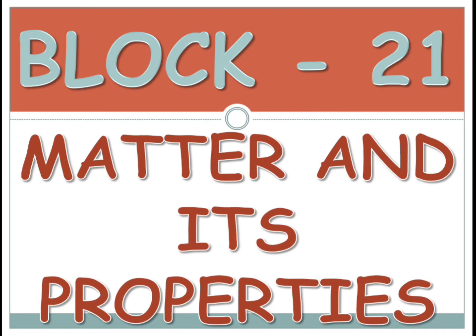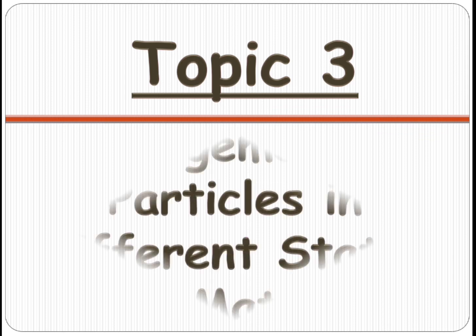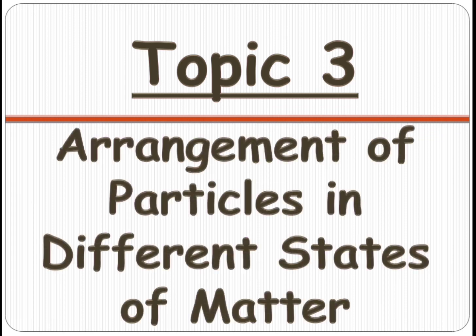In this we have learned what is matter and that matter is made up of small particles. Now in the third topic we are going to learn how these particles are arranged so that it has different states of matter. So the topic is: arrangement of particles in different states of matter.